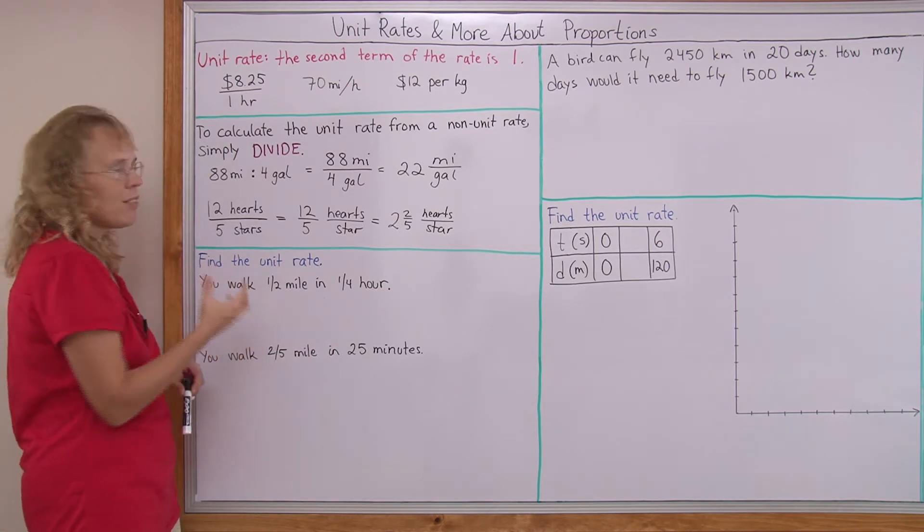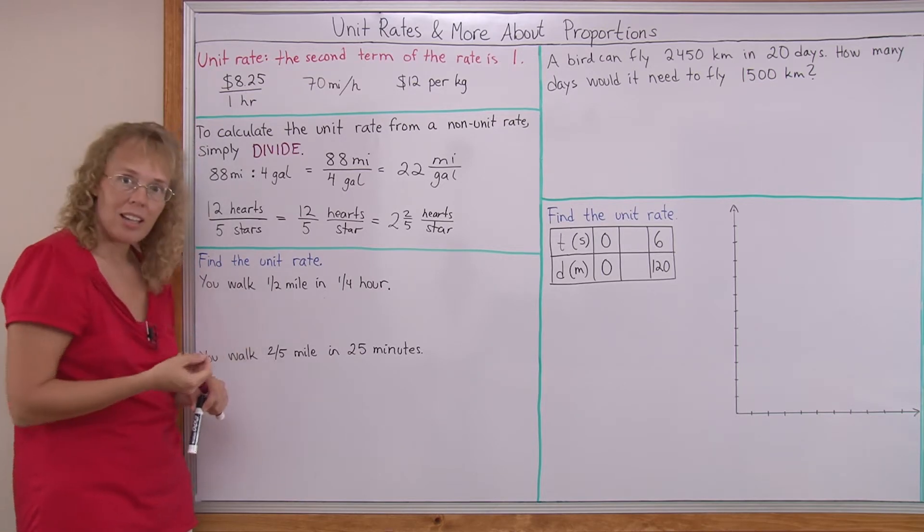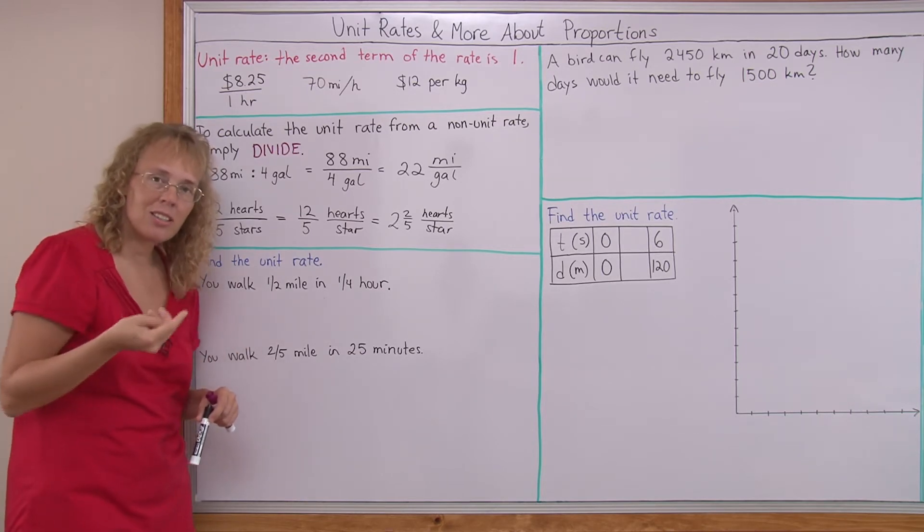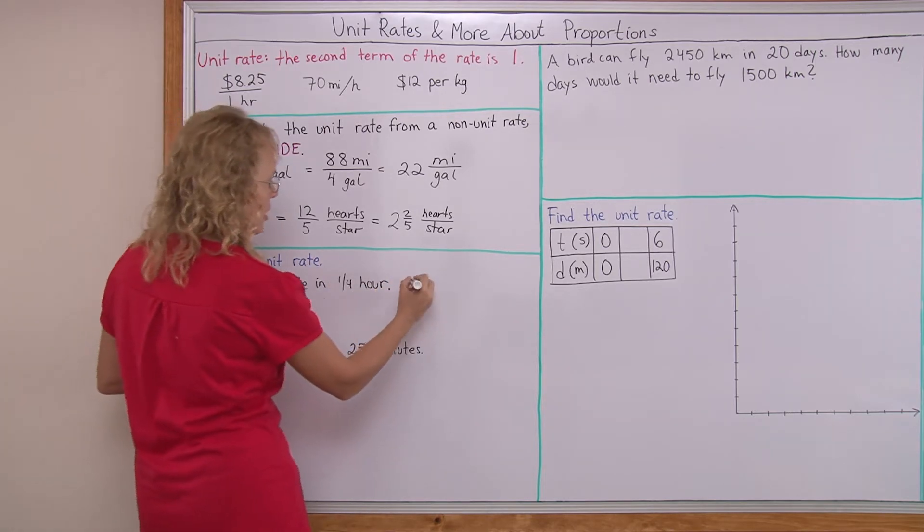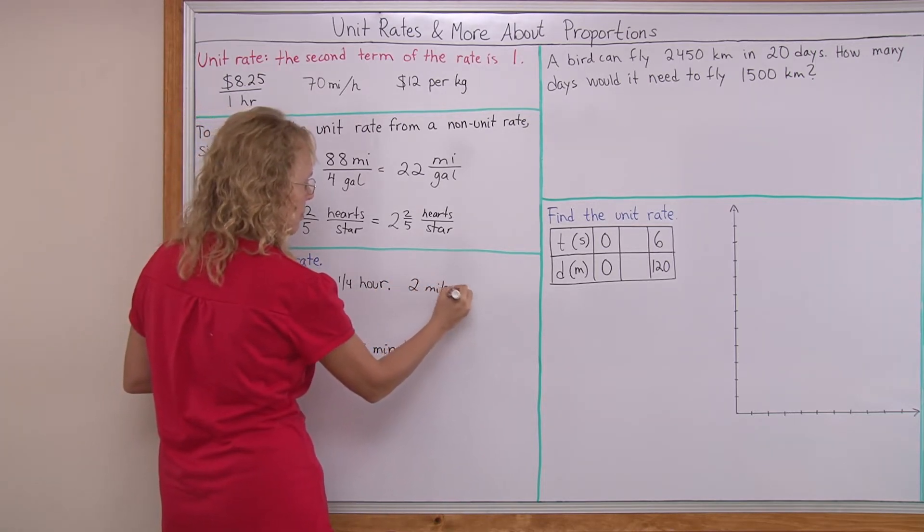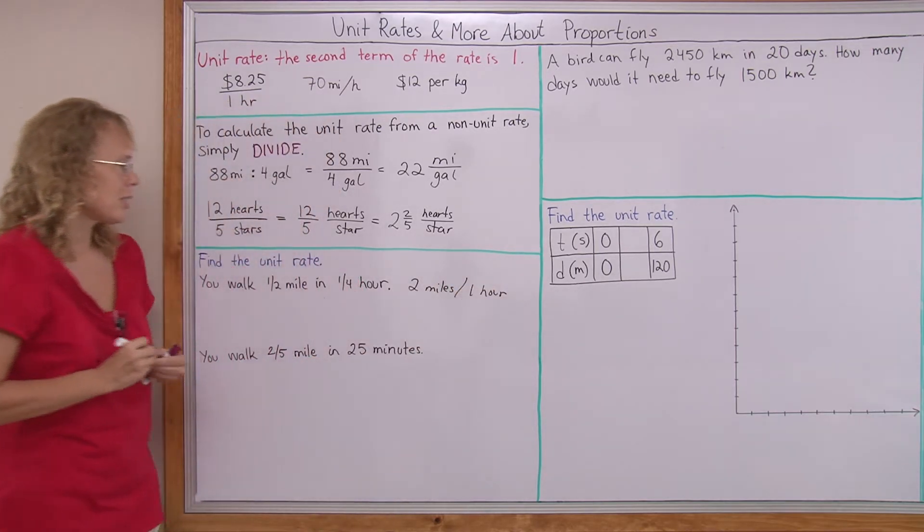If you walk half a mile in 15 minutes, then in half an hour, you would walk a mile. And in an hour, you would walk two miles, right? So the answer is two miles per one hour.